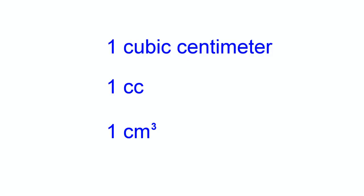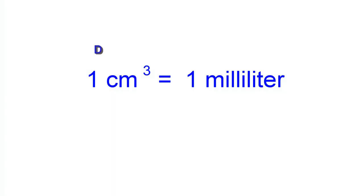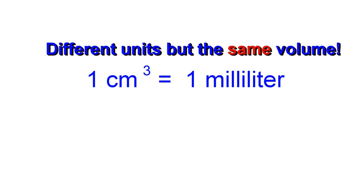The cubic centimeter is one of the most important units of volume in the study of chemistry. So you need to become very familiar with its approximate size and conversion factors for other units. One conversion factor that you really need to know is that the volume of one cubic centimeter is equal to the volume of one milliliter.